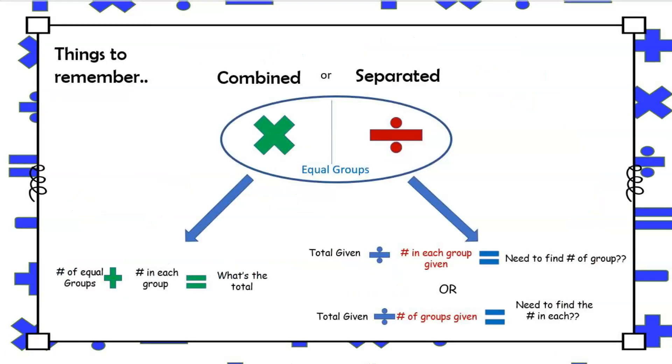In summary, here are a few important things to keep in mind. When it comes to distinguishing between multiplication and division, remember that both operations involve equal groups. However, the difference between them is that they're opposite operations.